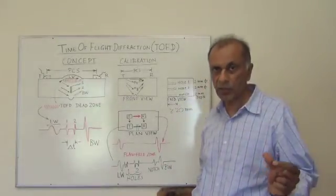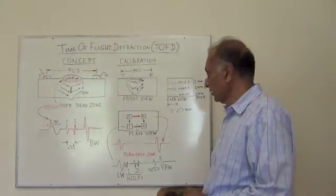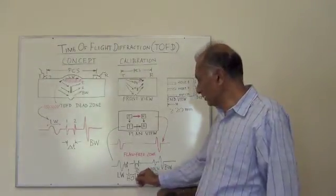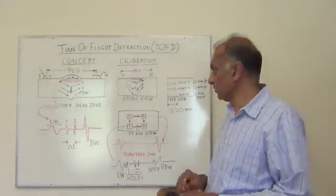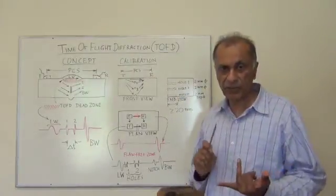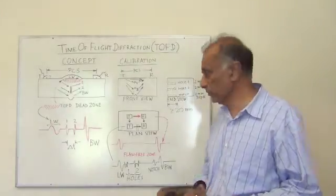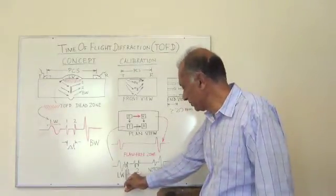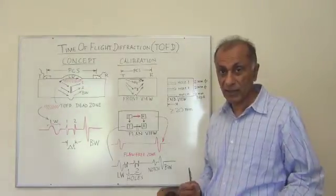Now from each hole we will see two signals: the top of the hole and the bottom of the hole. Now what you can see here is that the separation between these two signals decreases as the holes get shallower and shallower. So this hole actually is the most challenging one to detect and the most challenging one to size also because the time separation between these two is the minimum.